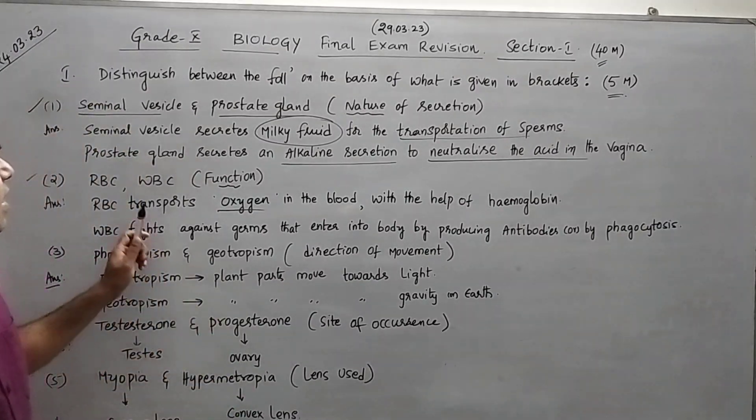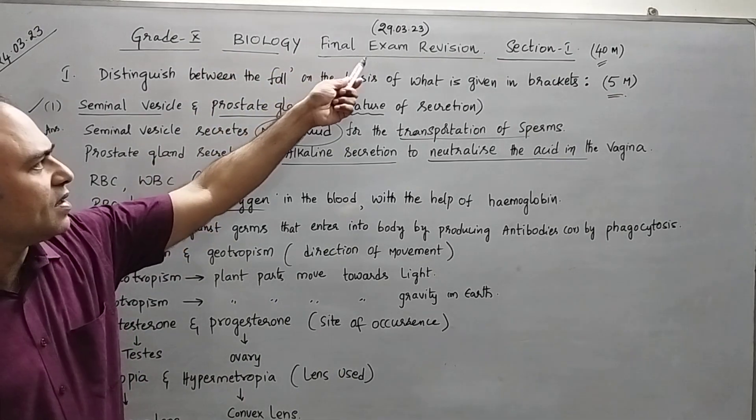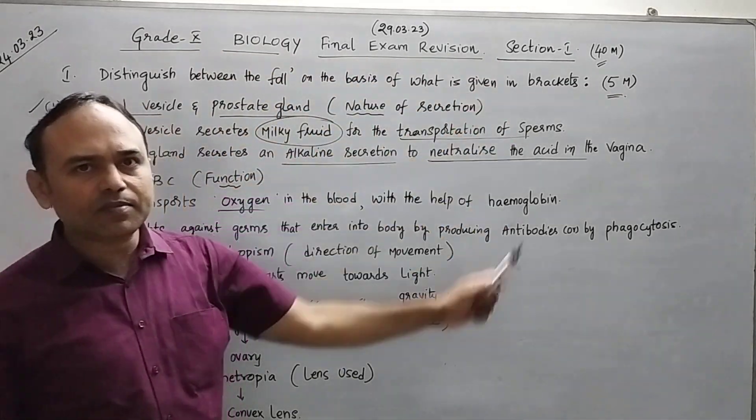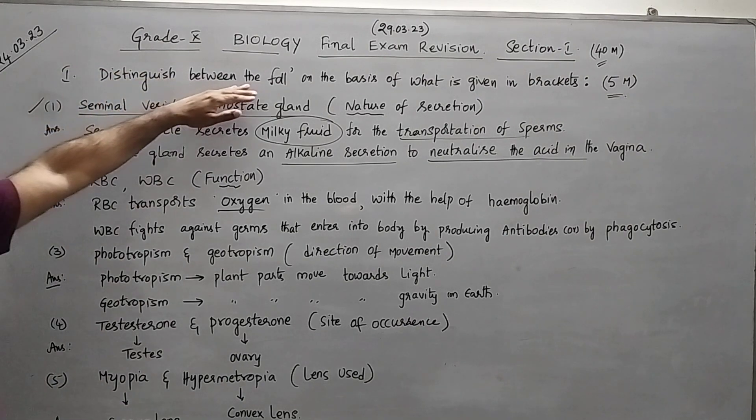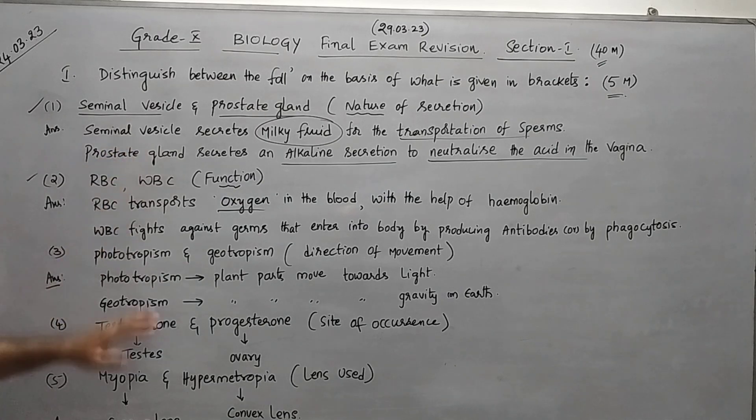Good evening students. In today's class we are going to discuss grade 10 biology final exam revision, section 1, 40 marks. Distinguish between the following on the basis of what is given in the bracket. We will take five questions first.